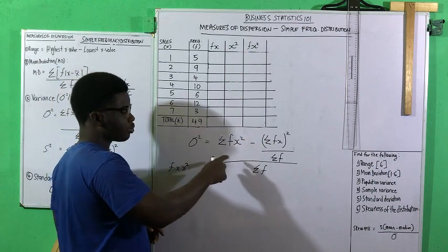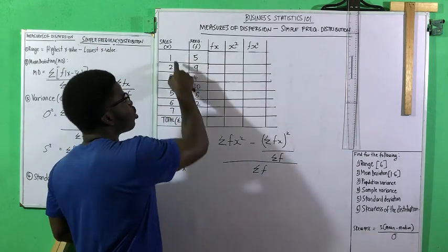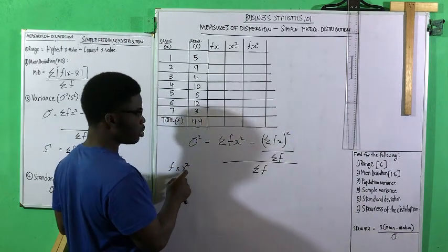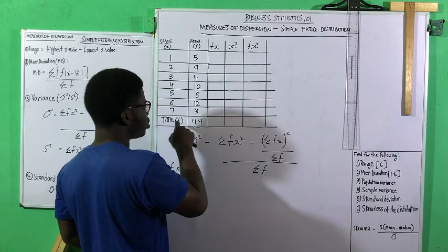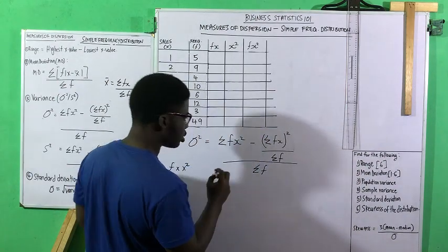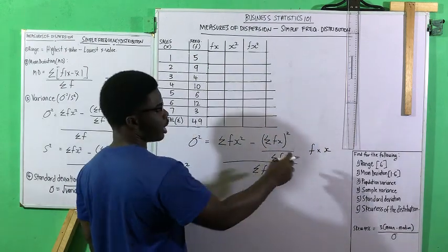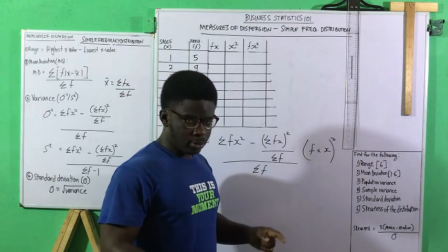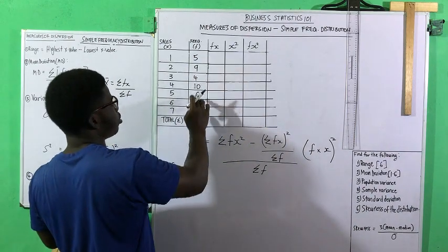To find sigma fx-squared: the frequency is already given, so we first find x-squared by squaring all the x values. Once we have x-squared, we multiply each by its corresponding frequency to get f times x-squared. Then we sum all of them to get sigma fx-squared. For the other term, sigma fx — you multiply f by x first and then square the result.